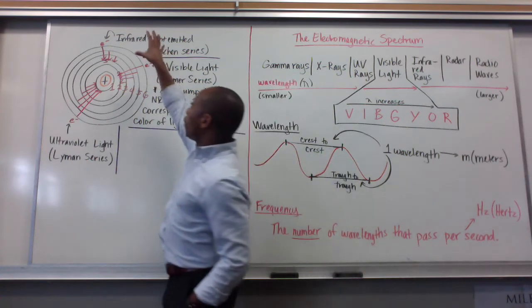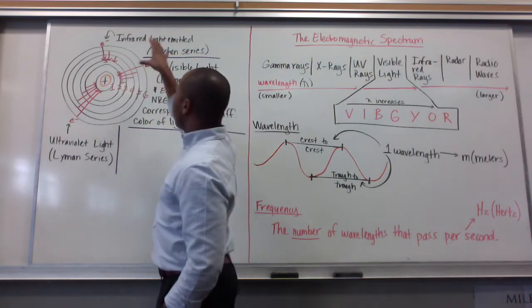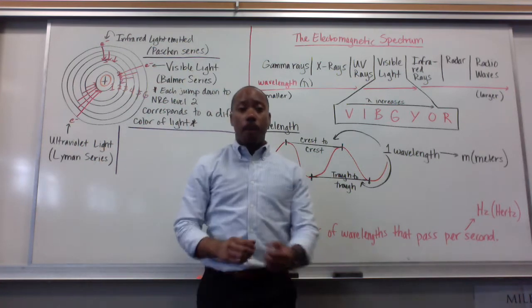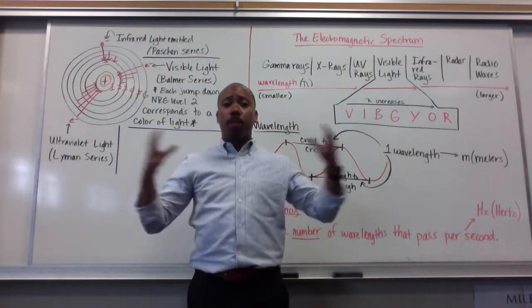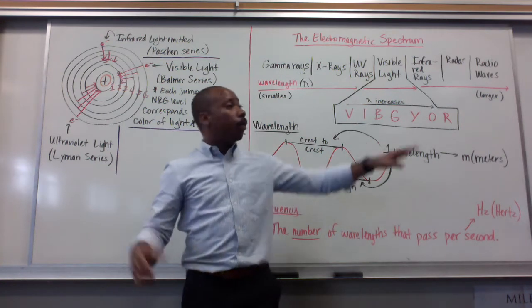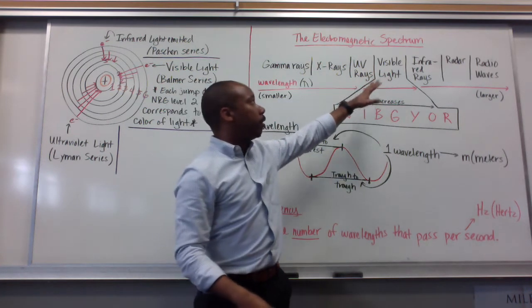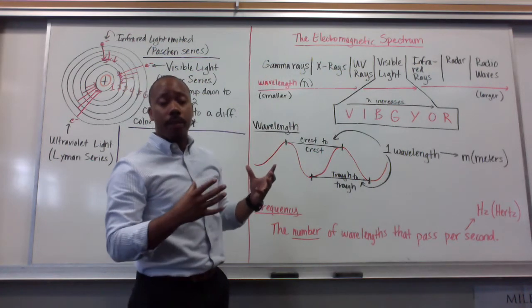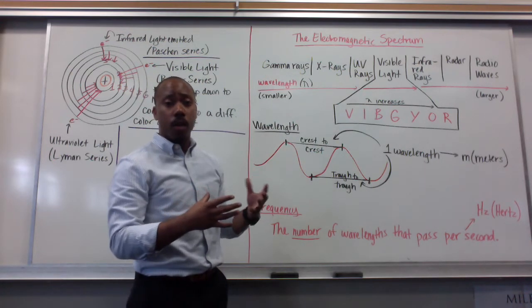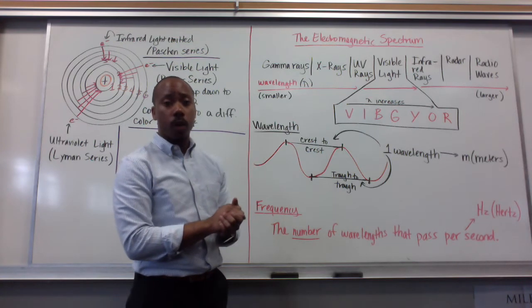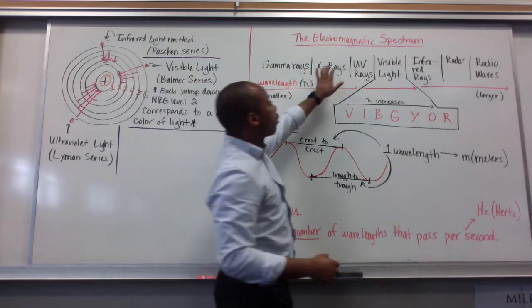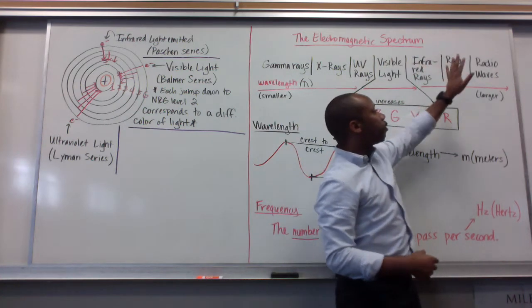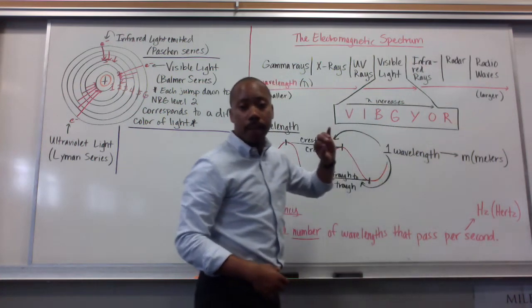Now, these different parts of light, infrared light, visible light, ultraviolet light, are part of a bigger spectrum of light. We call that the electromagnetic spectrum. This is a continuum of these different types of waves that we've seen and we've talked about before. And you've heard about these before, I'm sure. We have gamma rays, x-rays, UV rays, visible light, which most of our focus will be on, infrared rays, radar, and radio waves.